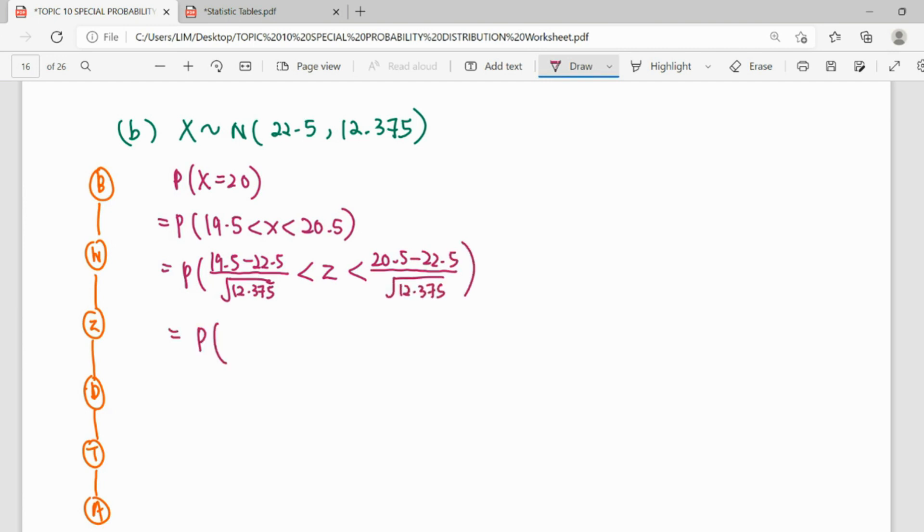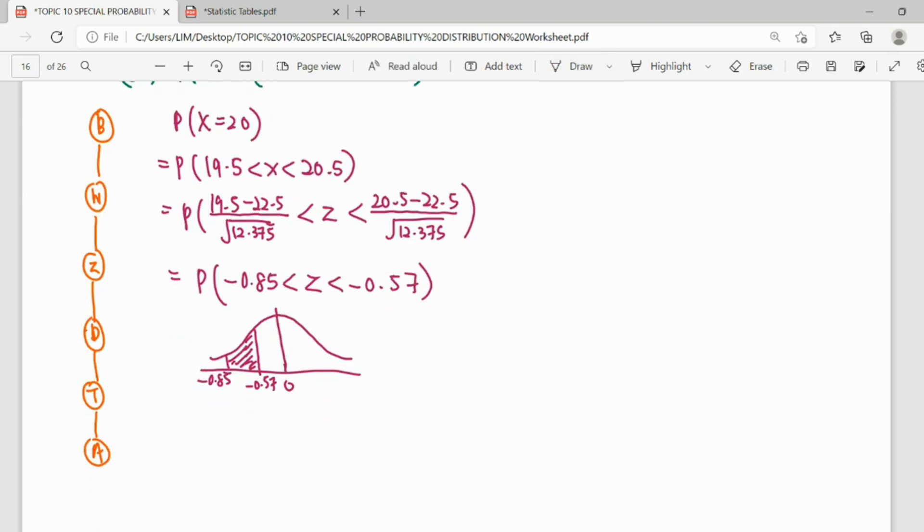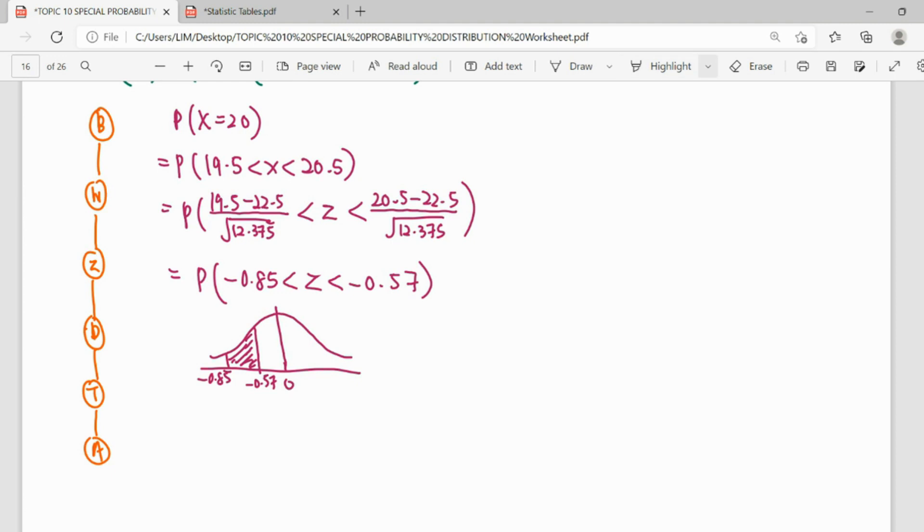So simplify this Z value to 2 decimal places only. Then we draw this normal graph where the negative Z score is at the left hand side here, negative 0.85 and negative 0.57 in between. So how to find this area from the table? As we know, the table only takes the tail area. So from here, actually you can see, we take the larger tail here, then subtract to remove the outer parts. Then we get the area that we want.